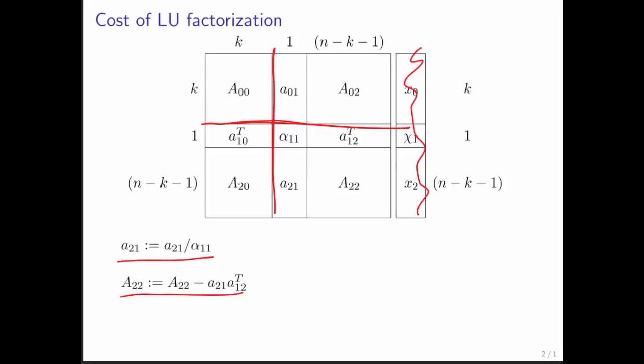Remember that the algorithm proceeds from the top left to the bottom right. Notice that initially this top part here is 0 by 0, and by the time we're done, we will have swept through the entire matrix. We're freezing here a moment in time when we have done k iterations already. This matrix is k by k, this is always one row and one column, and then what's left are n minus k minus 1 rows and n minus k minus 1 columns.